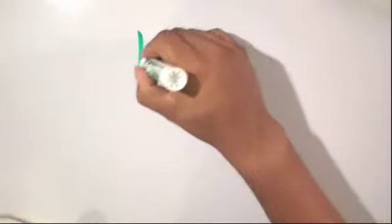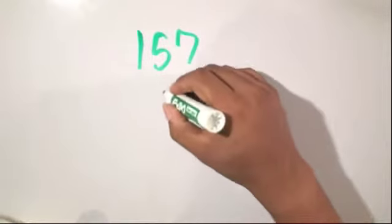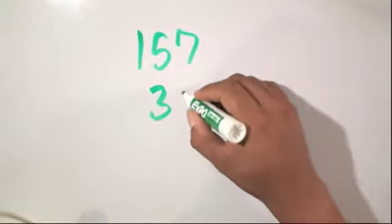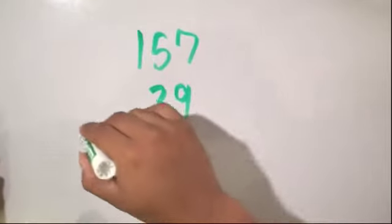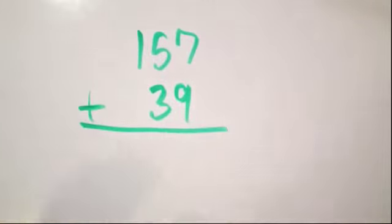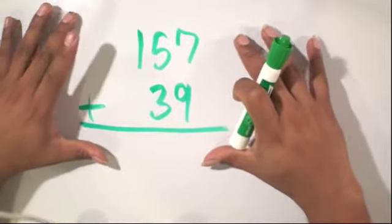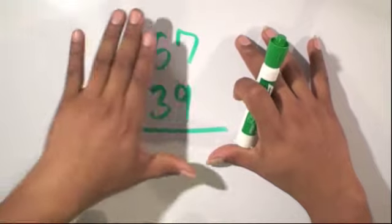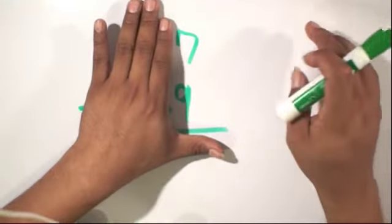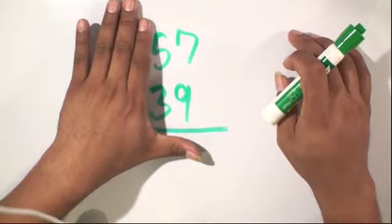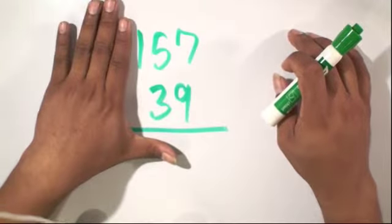Okay, next, let's say we had a more complex addition problem such as 157 plus 39. Well, first of all, let's look at this problem and see how it's set up. What we can see from here is we have the ones are lined up together, the tens are lined up, and then we have the hundreds.